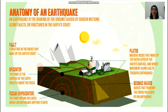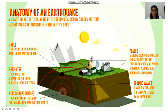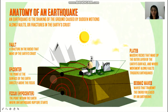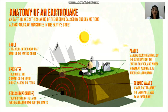This is the anatomy of an earthquake. You have the focus or hypocenter, which is the point within the Earth where an earthquake rupture starts. The focus sends out seismic waves that transmit the energy released by the earthquake. Then there is the epicenter, which is the point at the surface of the Earth directly above the focus.